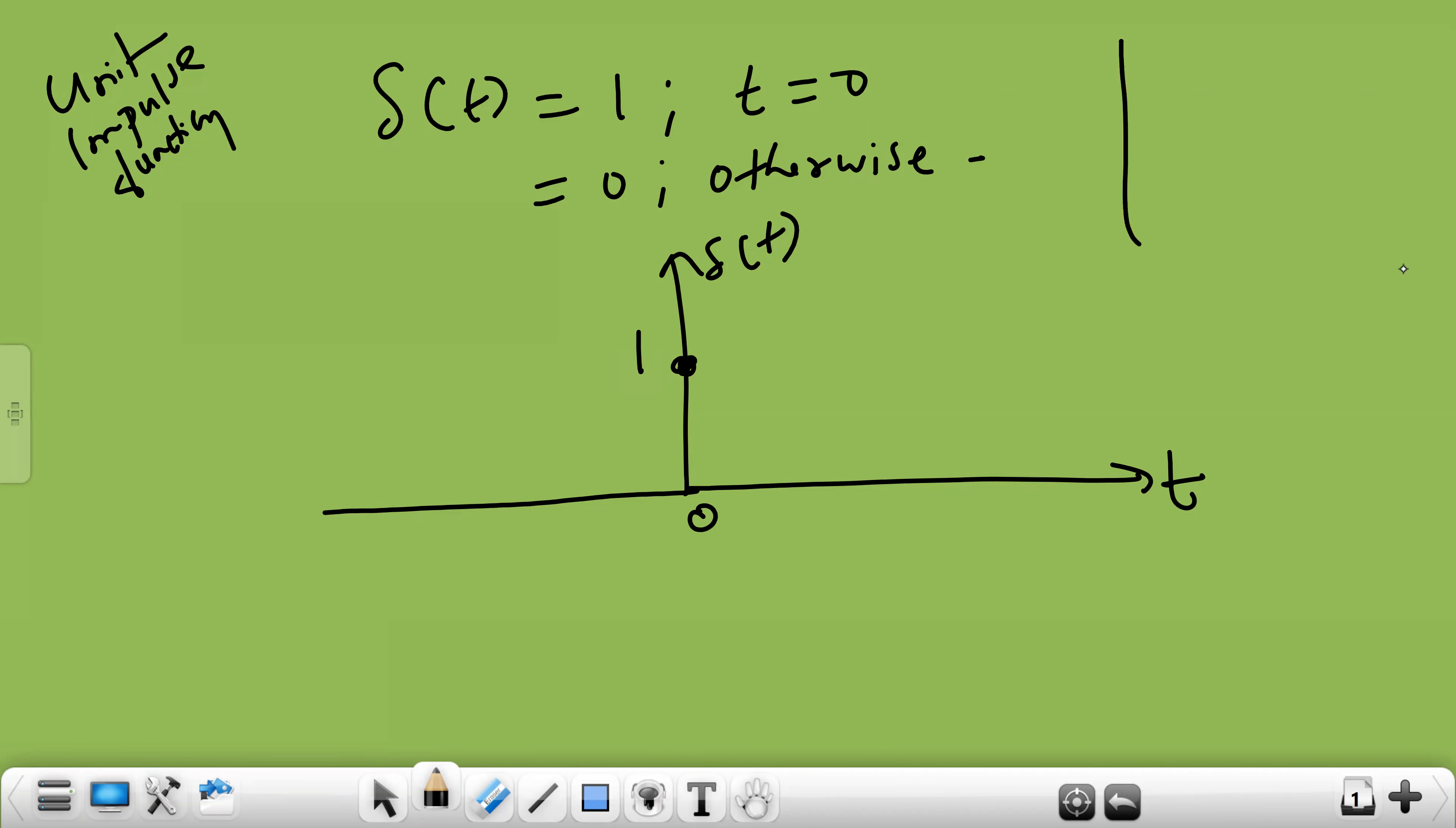Now, earlier you have plotted u of t, it is coming like this. This is u of t, which is otherwise known as unit step function.